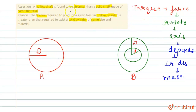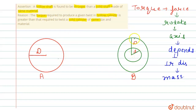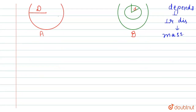The first statement is: a hollow shaft is found to be stronger than a solid shaft made of the same material. Let us consider the shaft as a cylinder. We have a solid cylinder A with radius capital D, and a hollow cylinder B with inner radius small d and outer radius capital D, as shown in the two figures. If both cylinders are made of the same material...